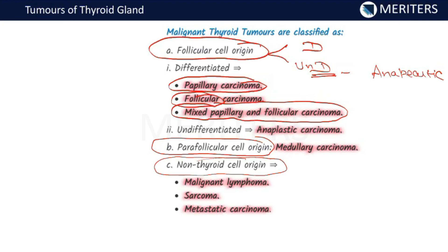Parafollicular cell origin gives rise to medullary carcinoma. Parafollicular means near to follicular cells — cells present around your follicular cells. These parafollicular cells produce calcitonin. Medullary carcinoma arises from parafollicular cells. Non-thyroid cell origin includes malignant lymphomas, sarcomas, and metastatic carcinomas.